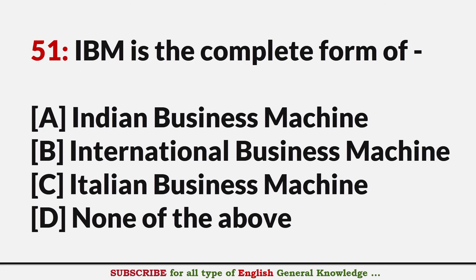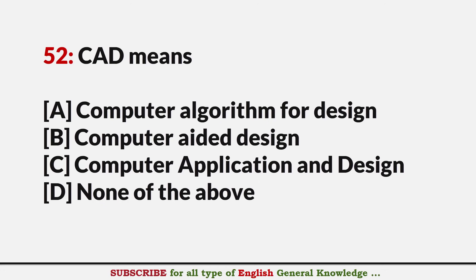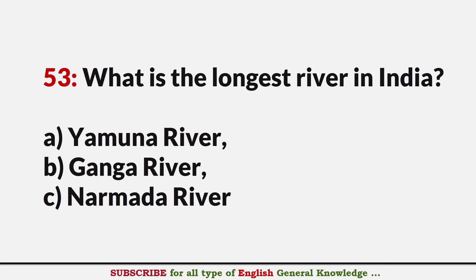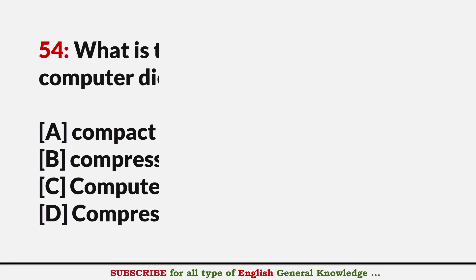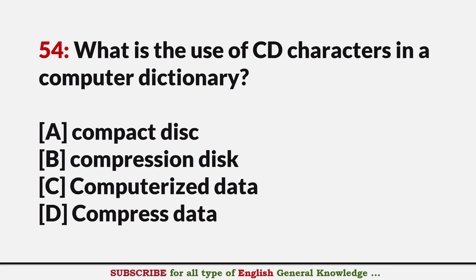What is the complete form of IBM? Answer B: International Business Machines. What does CAD mean? Answer B: Computer Aided Design. What is the longest river in India? Answer B: Ganga River. What is CD in a computer? Answer A: Compact Disk.